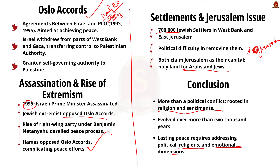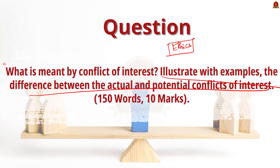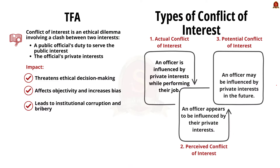Now let us move on to a previous year ethics mains question. The question is: what is meant by conflict of interest? Illustrate with examples the difference between actual and potential conflict of interest. This is a basic question from the static part of the syllabus requiring conceptual clarity. In the intro, define conflict of interest, why it occurs, and its importance in ensuring no biasness in decision making. Then differentiate it with potential conflict of interest.